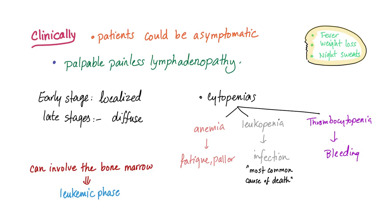Clinically, patients with follicular lymphoma can be asymptomatic or present with palpable painless lymphadenopathy. In early stages, lymphadenopathy is localized; in late stages, the lymphoma is diffuse. Cytopenias can occur, leading to fatigue, infection, and bleeding. Infection is the most common cause of death in follicular lymphoma patients. Follicular lymphoma can involve the bone marrow — this is called a leukemic phase, as it is a non-Hodgkin's lymphoma.